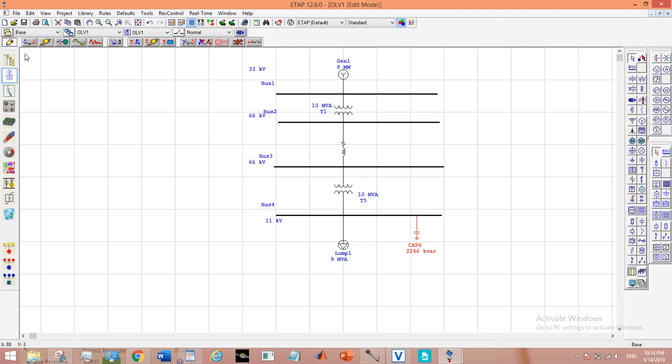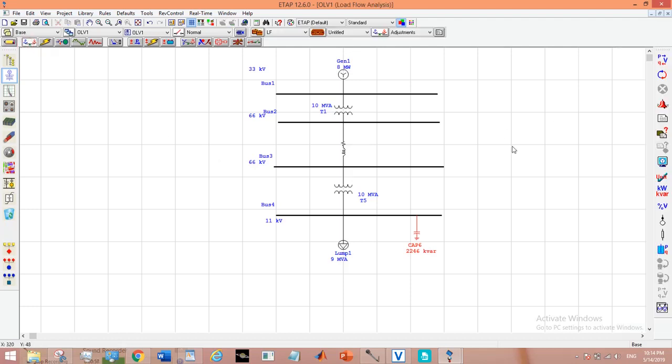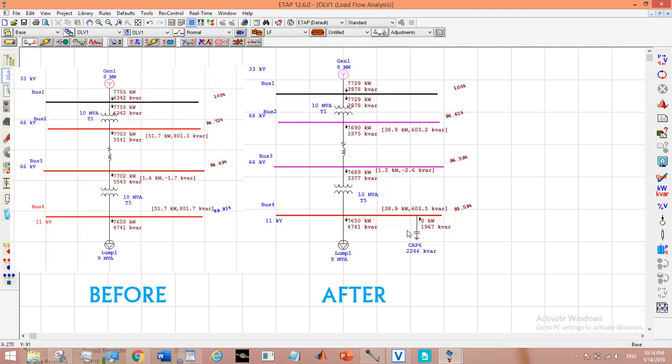Now let's again go to the load flow analysis and run the load flow. What we observe is that the capacitor is providing the kVARs and the kVARs coming from the generator, they have reduced.